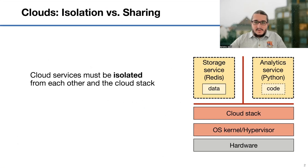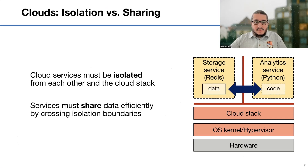Cloud environments face a fundamental tension between isolation and sharing. On one hand, services must be isolated to prevent attacks on each other within a cloud provider. On the other hand, services must cross isolation borders for data exchange and sharing. For example, you may have a data storage service, a database with a market data feed, and an analytic service powered by Python. The analytic service should efficiently access data provided by the storage service, and the cloud environment should guarantee it never gets access to extra data.